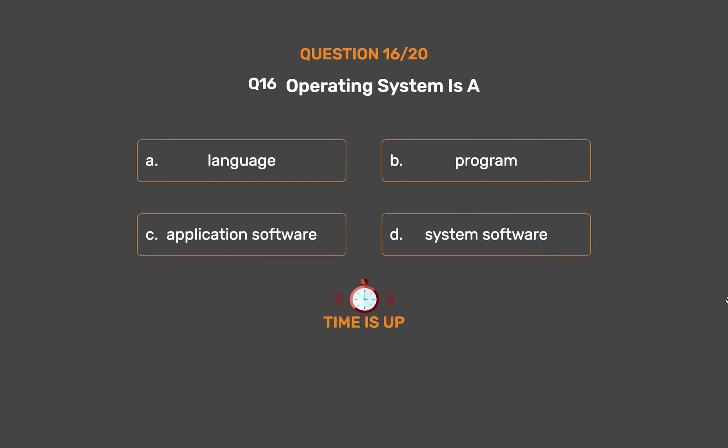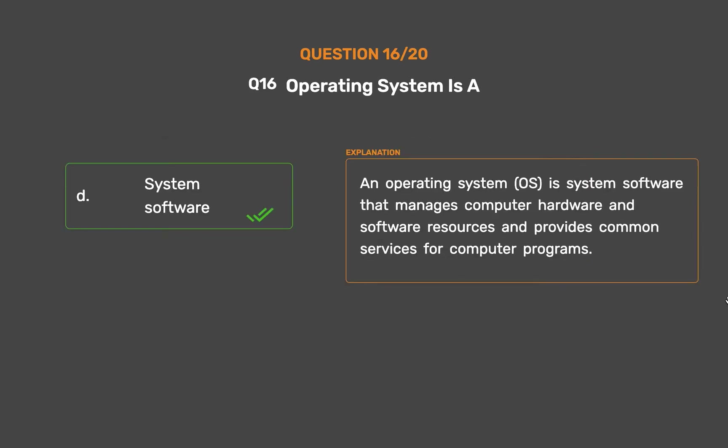The correct answer is Option D: System software. An operating system (OS) is system software that manages computer hardware and software resources and provides common services for computer programs.